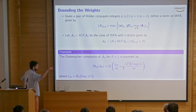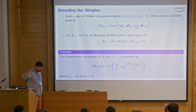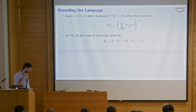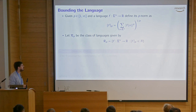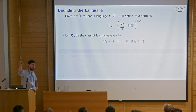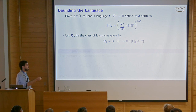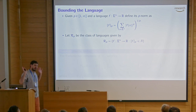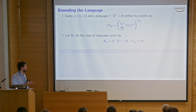Both approaches — controlling via automaton weights or language norm — have a common problem: you can't get algorithms with provable guarantees working directly on those representations. Optimizing on the language requires dealing with an infinite-dimensional object, and some norms like L1 can't be computed from the automaton. Optimizing on the automaton weights leads to non-convex optimization. The solution is to control complexity via properties of the Hankel matrix using Schatten norms.